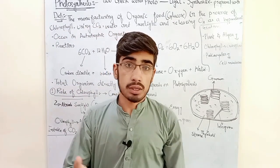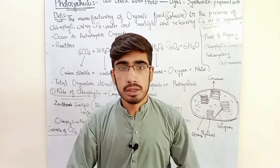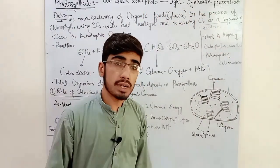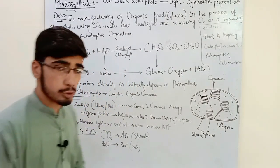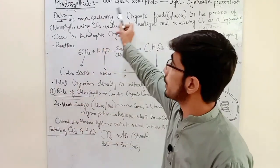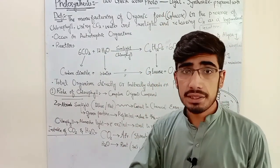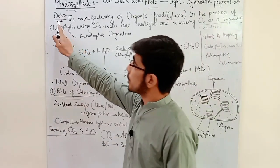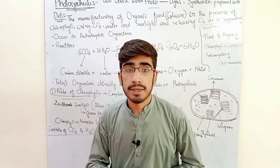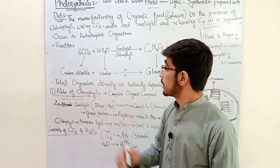So the meaning of photosynthesis is: light means light, and synthesis means preparation or manufacturing. Photosynthesis is the manufacturing of organic food — glucose is the organic food produced.